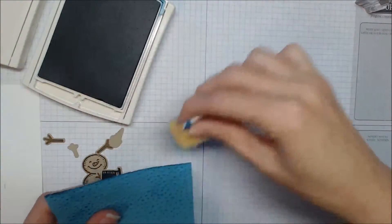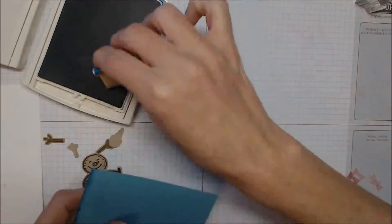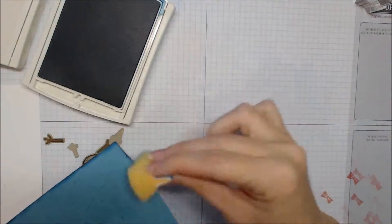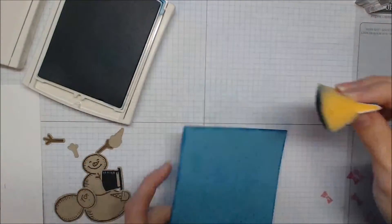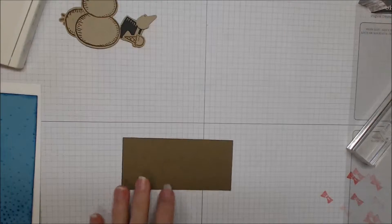When you're satisfied with the look, let's just go ahead and sponge the edges of that Marina Mist cardstock with the Pacific Point ink using that same sponge wedge.